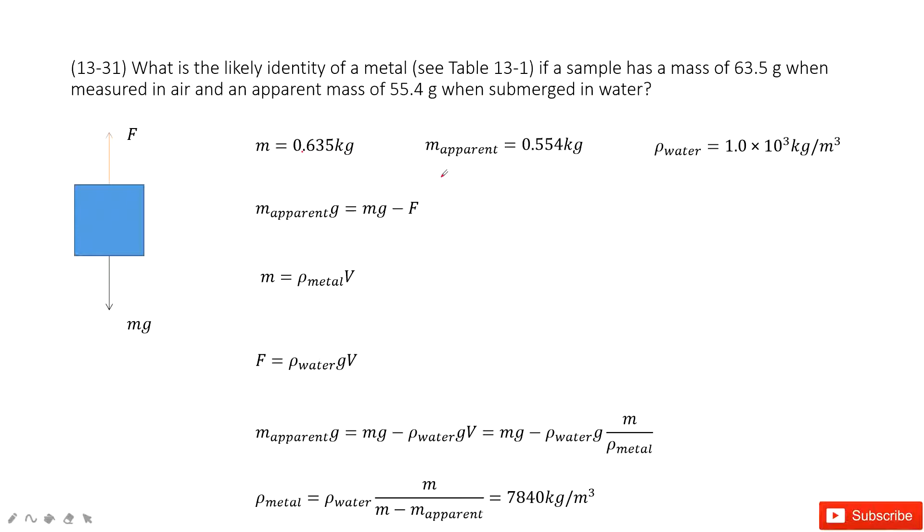In this one, we can see we have the metal object and the actual mass is given, apparent mass is given, and the density of water is given. But then we need to find the density for this metal.